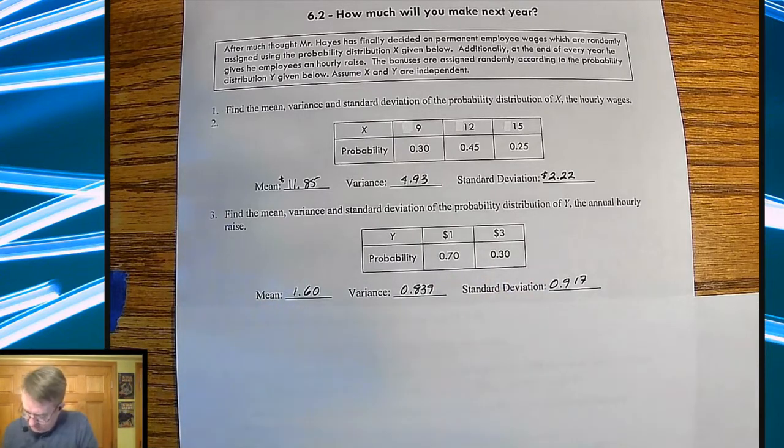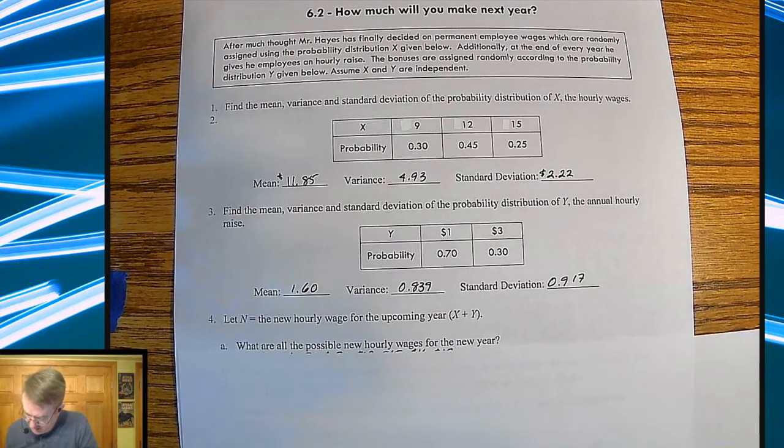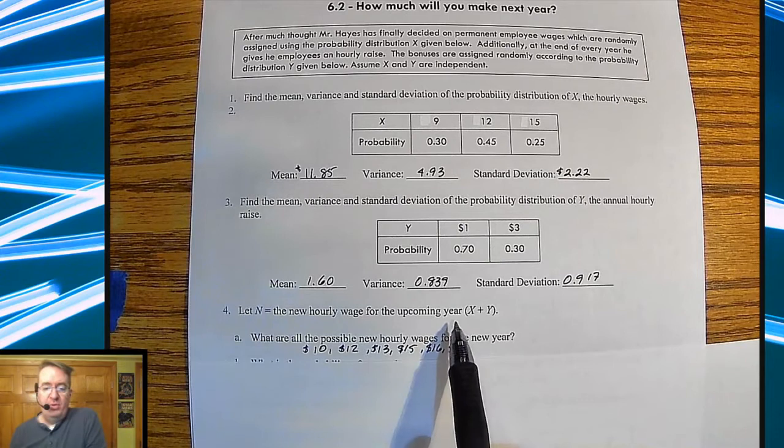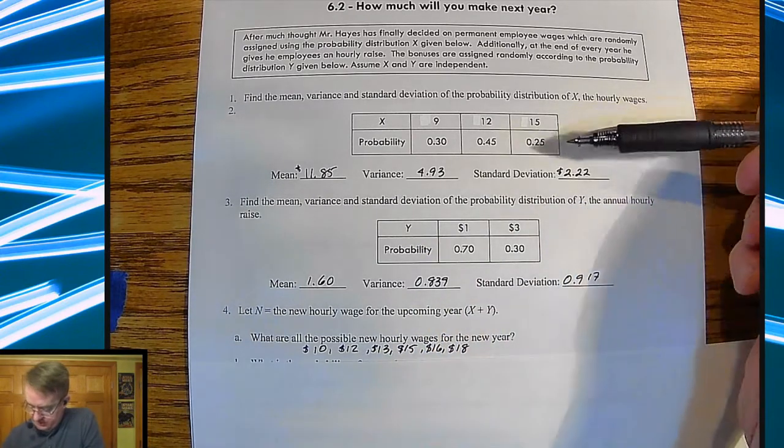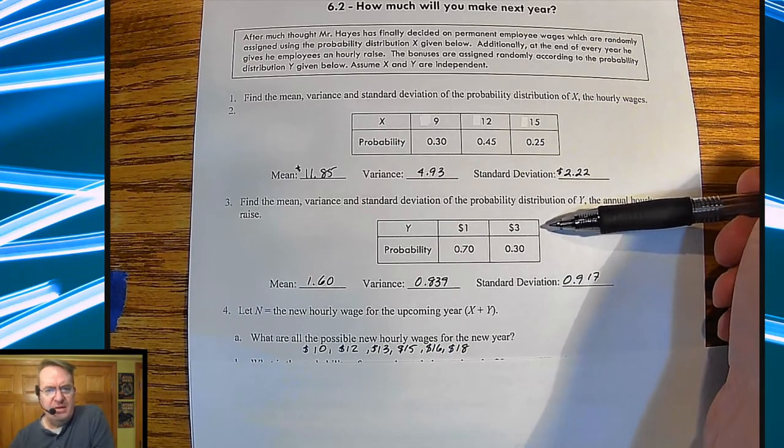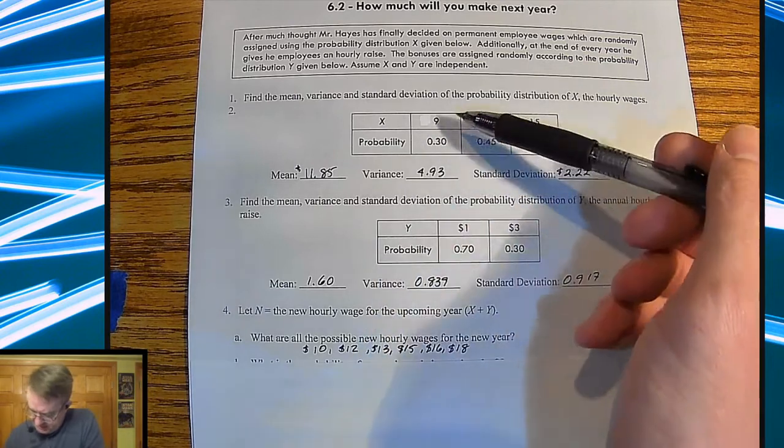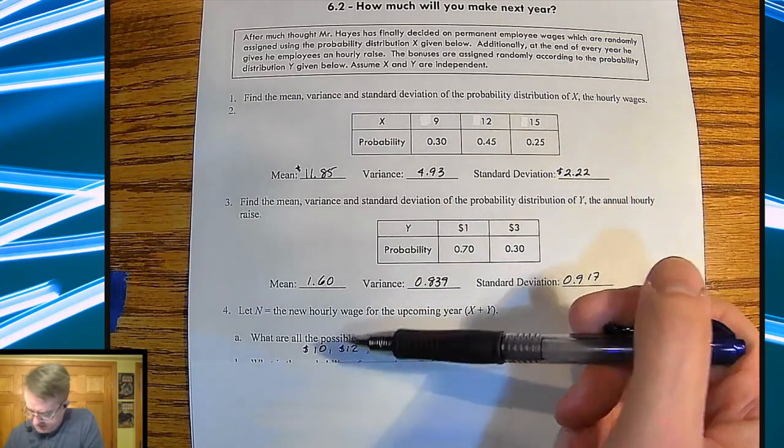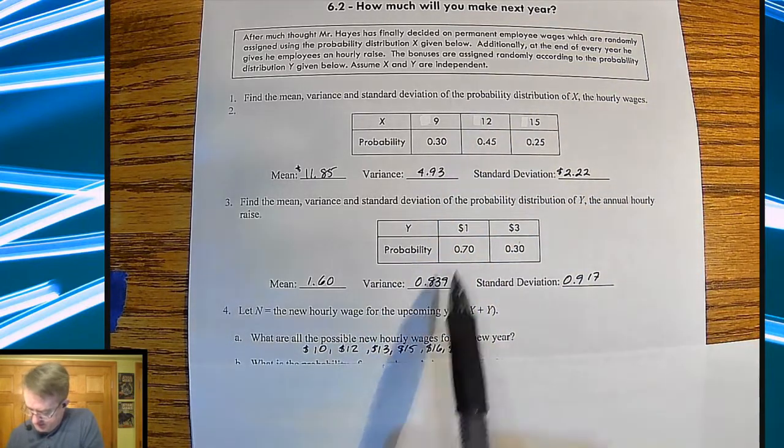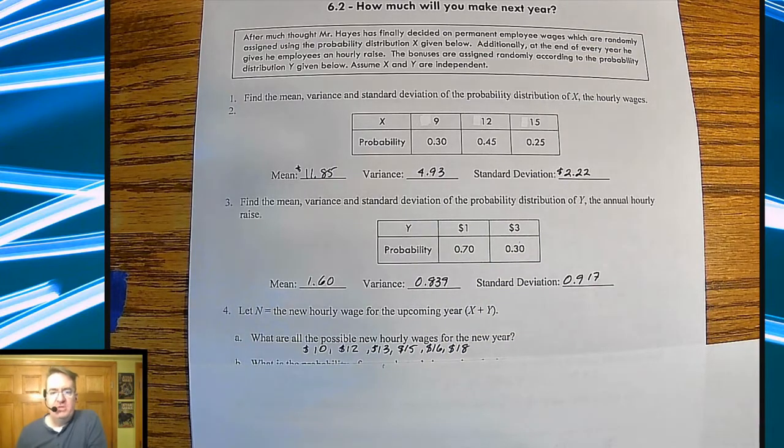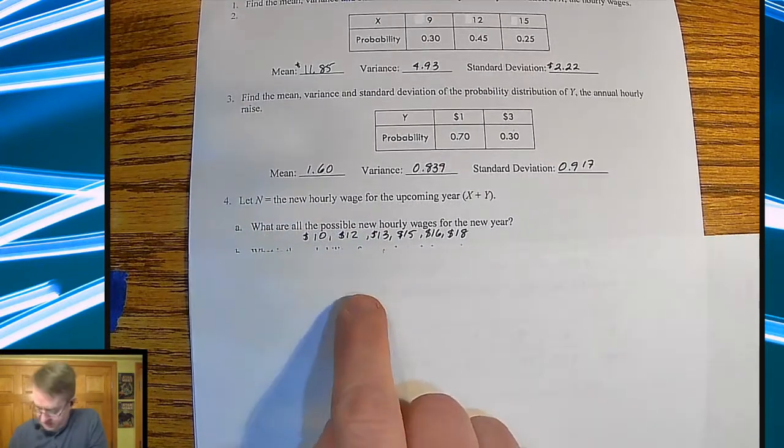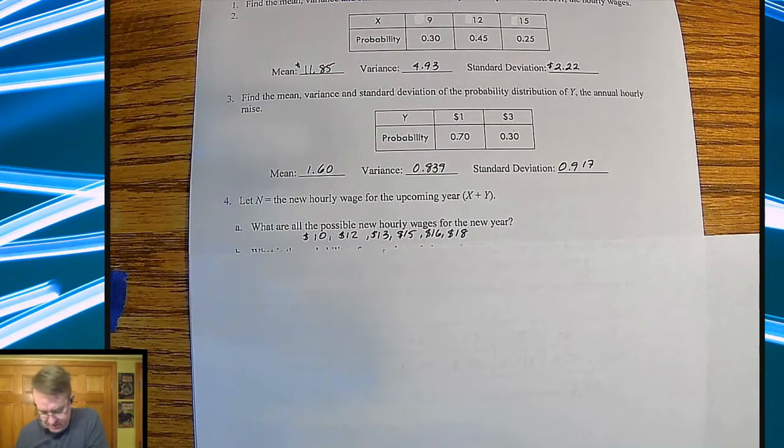So then we ask, you go through and you're going to find the mean and standard deviation of that, a little bit easier when you only have two data points. And I'm talking really fast. I'm sorry. We will slow it down just a touch. So once you find that information, the first question they ask is, we're going to find N, and N is the new hourly wage. And what we're going to do is, that's going to be X, so your old hourly wage, added to your raise. So what ends up happening is you can go $9 and a dollar raise and get $10, 9 plus 3 is $12, 12 plus 1 is $13, 12 plus 3 is $15, et cetera. Then we get $16 and $18.